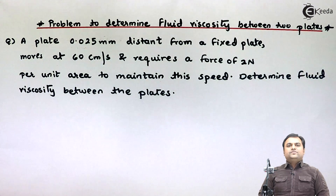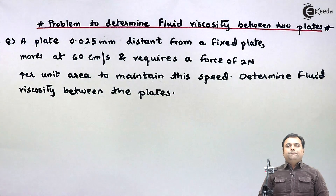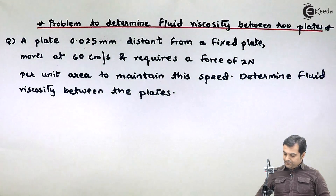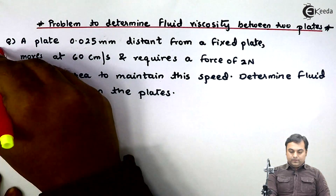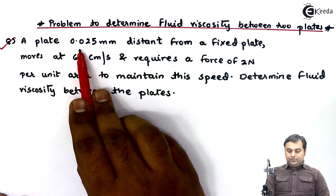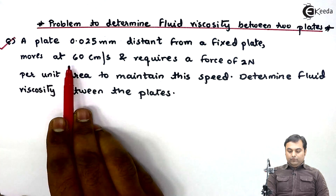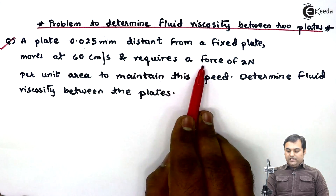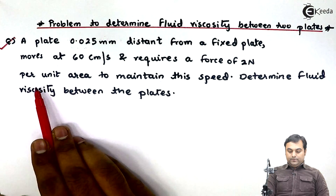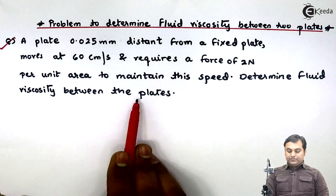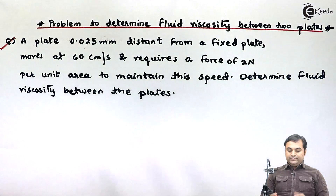In this video we will see a problem in which we have to calculate the viscosity of a fluid flowing between two plates. A plate 0.025 mm distant from a fixed plate moves at 60 centimeters per second and requires a force of 2 Newton per unit area to maintain this speed. Determine the fluid viscosity between the plates.